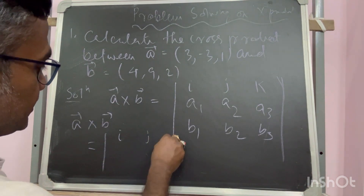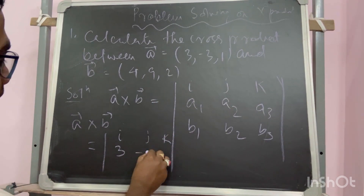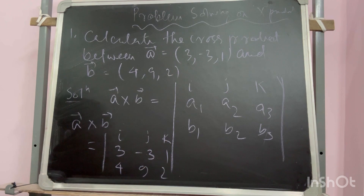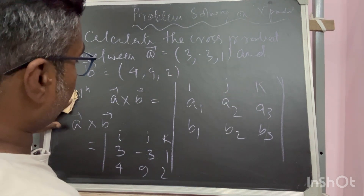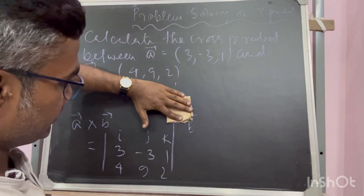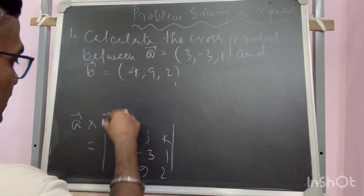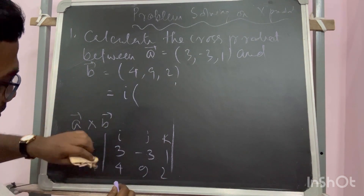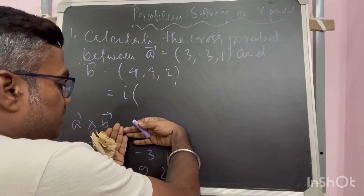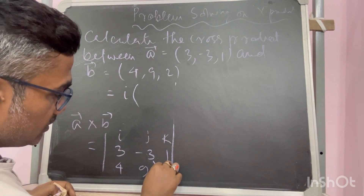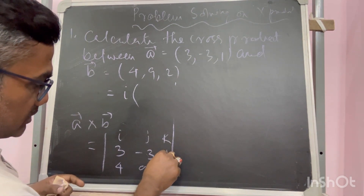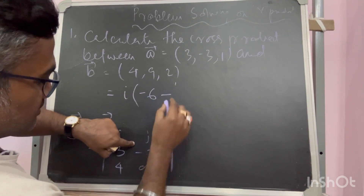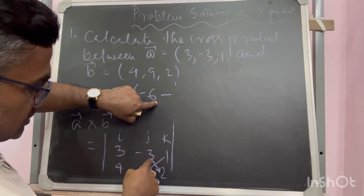Now it is very easy to write A cross B. I write I, J, K, then A: 3, -3, 1, then B: 4, 9, 2. To expand this matrix, when I put I, I blind this part. It comes from the left corner downward, then minus from the right corner. So: (-3 × 2) = -6, minus (1 × 9) = 9, giving -6 - 9.